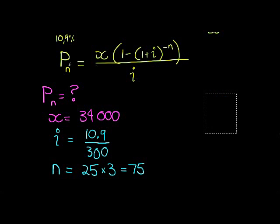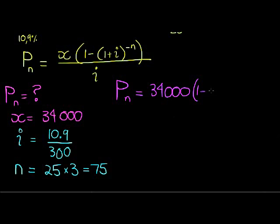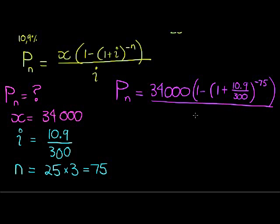Let's substitute into my formula. Pn equals 34,000 times [1 minus (1 plus 10.9 over 300) to the power of—and now very important—negative 75], close that bracket, and divide by 10.9 over 300.